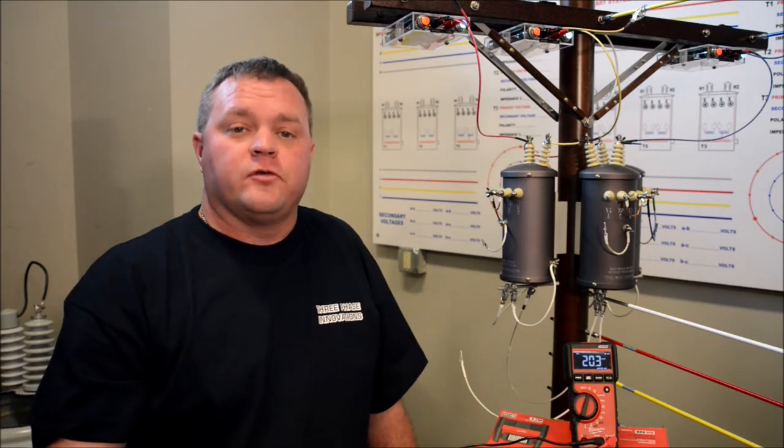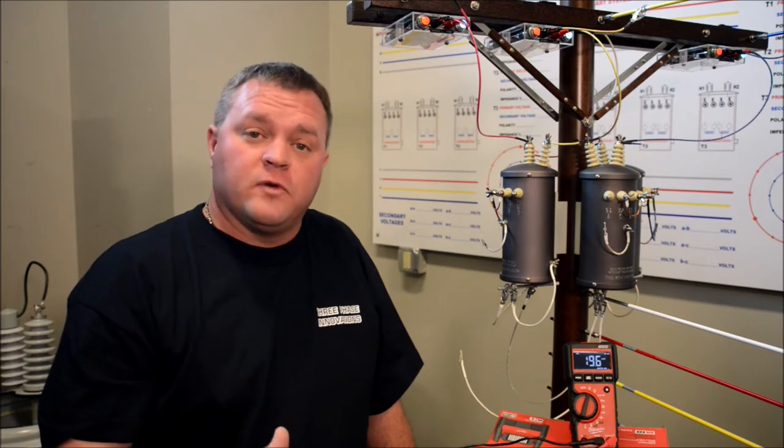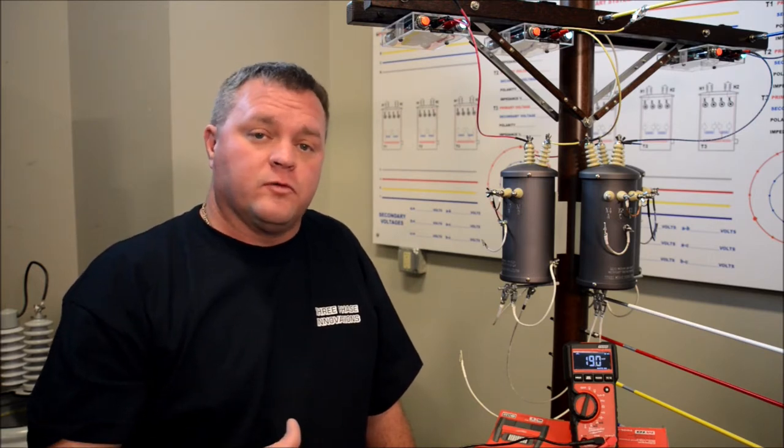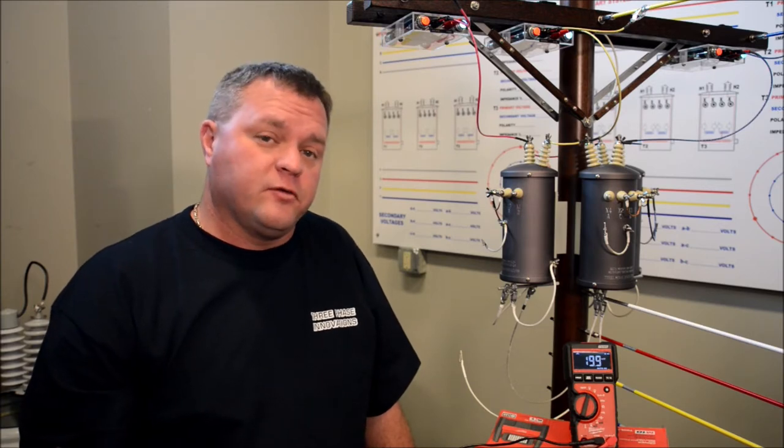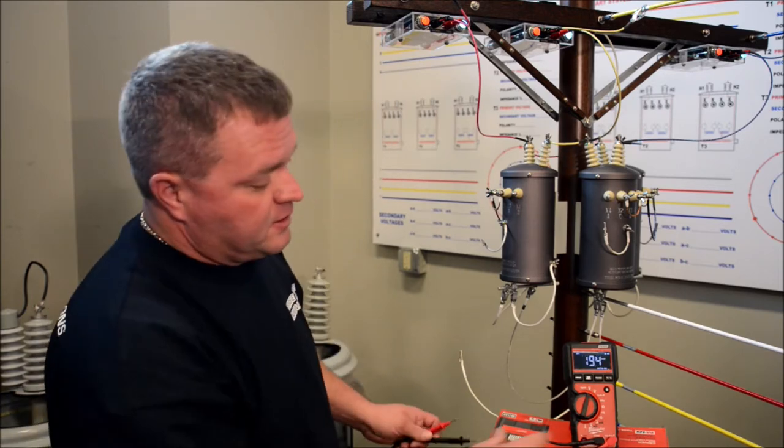Okay, we just showed you the Y delta and the harmonics between that, which is approximately 40 volts for a Y delta. Down here, we wanted to show you real quick the delta-delta. We were talking about 10 volts or less. That's what we should get. Okay, we've got our meter on.